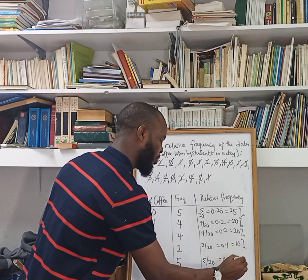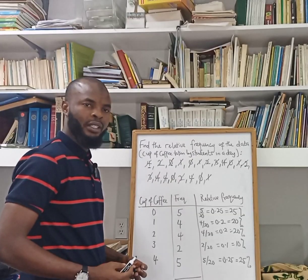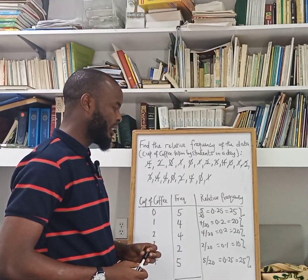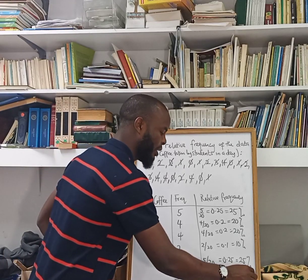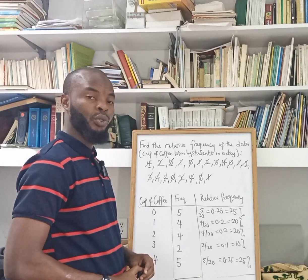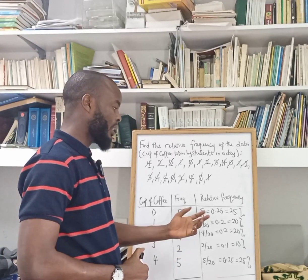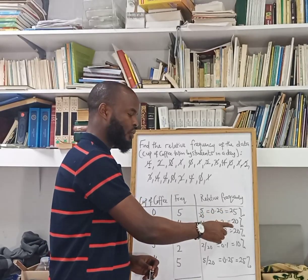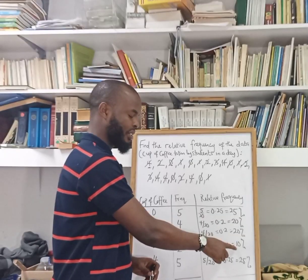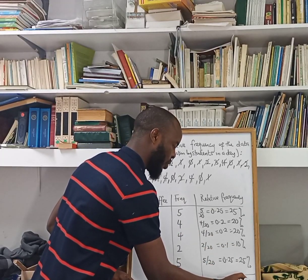One important thing about relative frequency is that after calculating, you must make sure the percentages sum up to 100. If the percentage is not up to 100 or more than 100, that means there is a mistake somewhere. Let's verify: 25 plus 20 gives 45, plus 20 gives 65, plus 10 gives 75, plus 25 gives 100. Yes, we have 100.